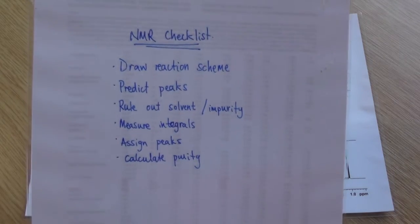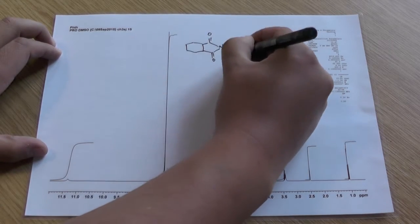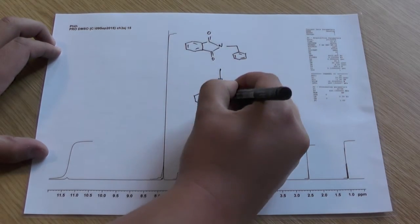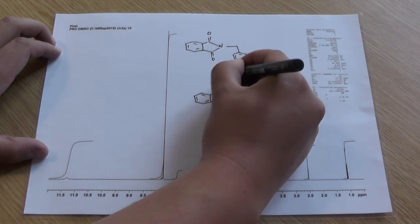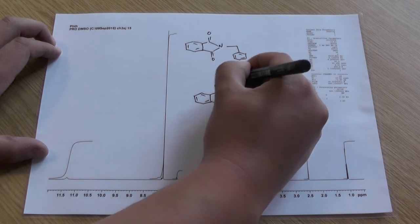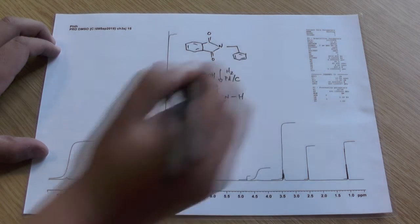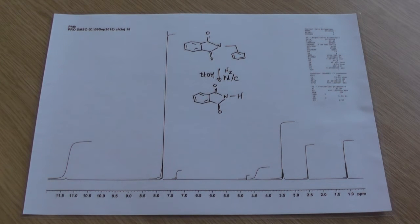First of all, you need to draw your reaction scheme. The reaction that we've chosen to look at is the de-benzylation of N-benzyl thalamide to thalamide. When you draw out your reaction scheme, you need to make sure you include everything that is used in the reaction, so all the solvents and reagents including the solvents used in the workup.